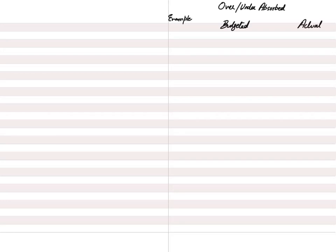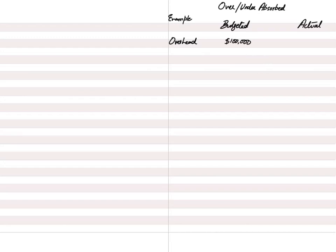Let's consider an example. Examination questions typically give two items: budgeted data (estimated) and actual data (what actually happened at year end). In this example, budgeted overheads were $100,000 — the estimated total indirect costs including factory rent, depreciation, and insurance. At year end, actual overheads amounted to $115,000.